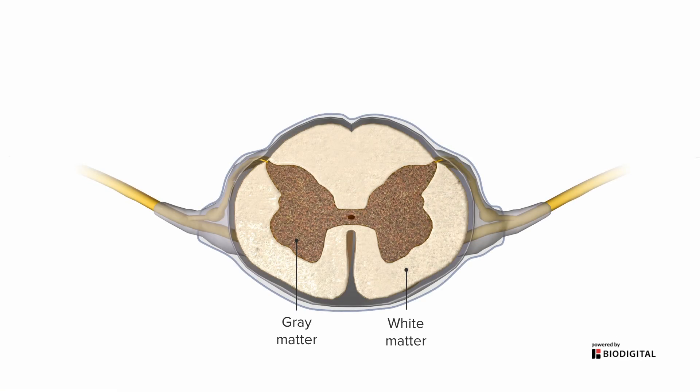We also find in the middle a very small opening called the central canal, and this is where cerebrospinal fluid flows. This is the equivalent of ventricles in the brain.